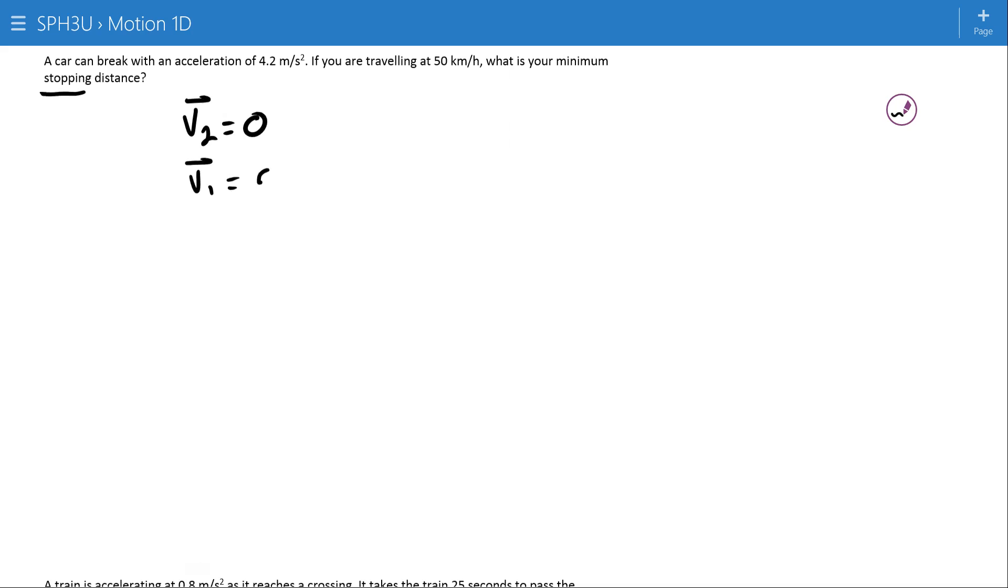V1 is 50 kilometers an hour, that's what you started with. And here we have an acceleration of 4.2 meters per second squared. Now we need to be careful. It says you can brake with an acceleration of 4.2 meters per second squared. That implies your acceleration and your current velocity are in the opposite direction of each other, so we have to make that acceleration negative 4.2 meters per second squared. Just before you get started, we might as well get it right and recognize that it's negative 4.2.